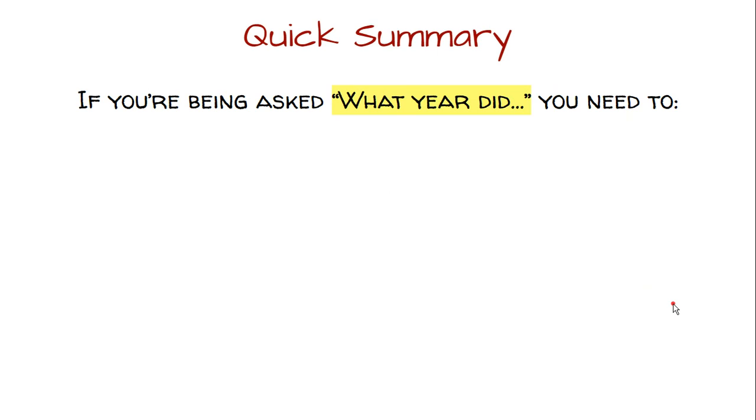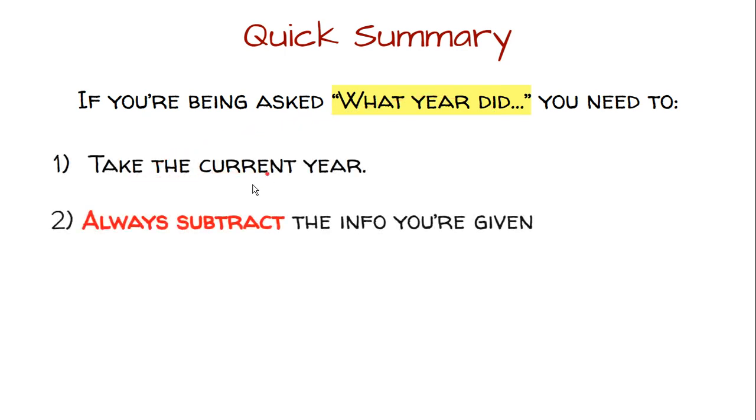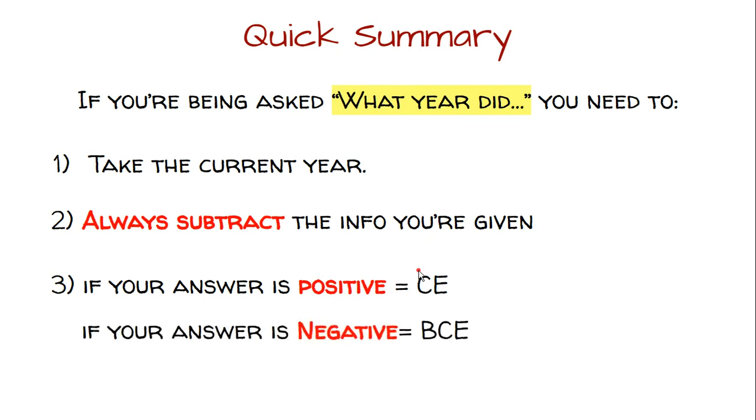Quick summary for that. If you're being asked what year did something happen, here are the steps you need to follow. You start with the current year. You always subtract with this. If it's asking you what year did something happen, you're always going to subtract. If your answer is positive, you put a CE after your answer. If it's negative, you're going to put a BCE after your date, and you're going to drop the negative from before the number you get. All right, that's all I have for you today. Thanks for watching, and I'll see you next time.